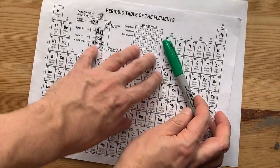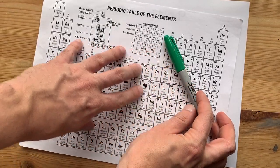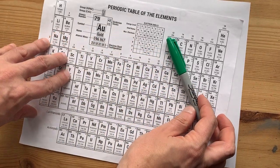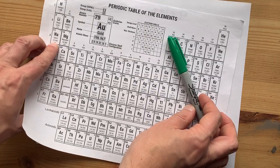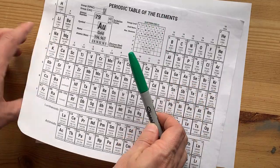Na is on the far left of the periodic table. Anything to the left of this staircase here, where my Sharpie marker is, is generally a metal. Hydrogen is the only exception. Sodium is definitely an alkali metal, though.